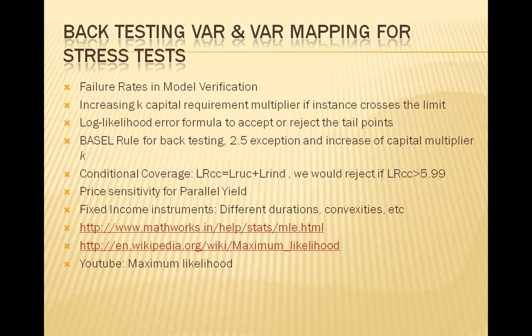Regulators are more concerned about Type 2 error since inaccurate models could produce many errors. Industry analysts have suggested lowering the required VaR confidence level to 95% and compensating with a greater multiplier, resulting in more exceptions which would be statistically significant. At 95% confidence, the one-year exception threshold would be 13; with more than 17, the probability of Type 1 error would be 12.5% but Type 2 error falls to 7.4%. Currently, the standard remains 99% confidence level.